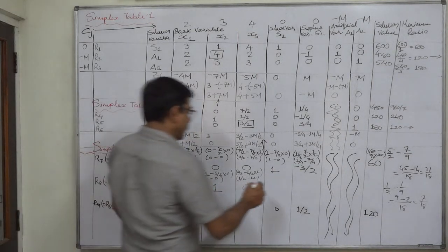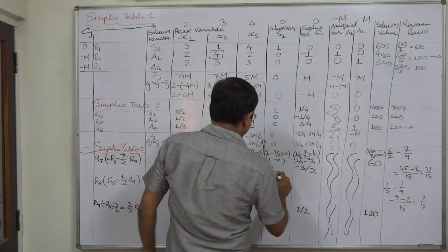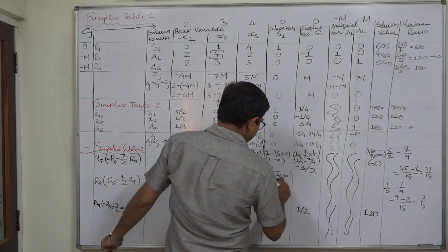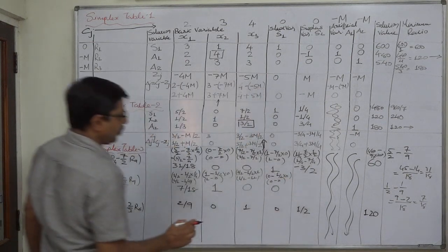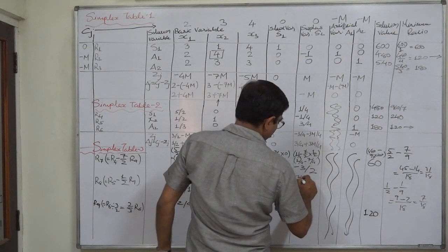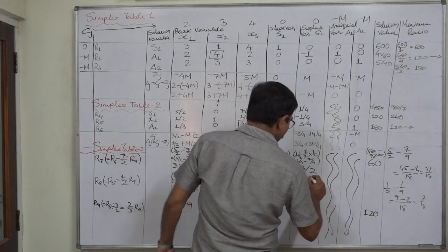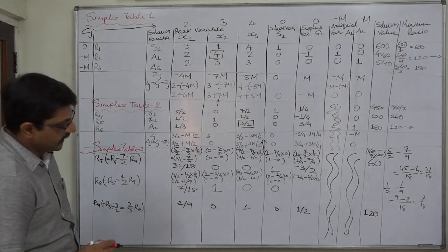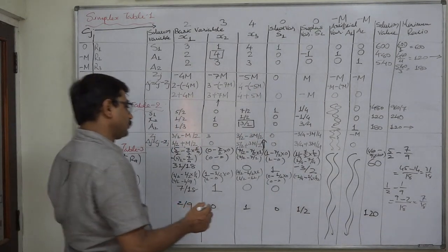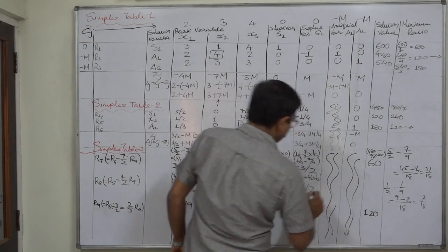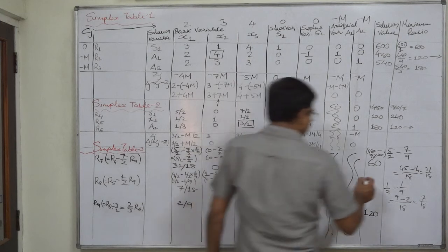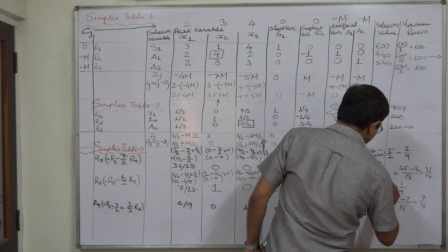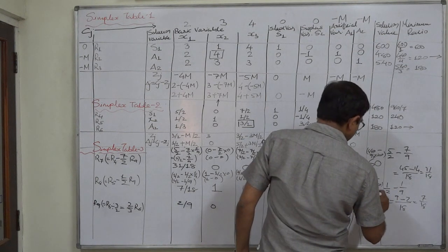Next element: 0 − (1/2)×0 = 0. Then: −1/4 − (1/2)×(1/2) = −1/4 − 1/4 = −2/4 = −1/2. Finally: 120 − (1/2)×120 = 120 − 60 = 60.